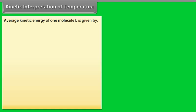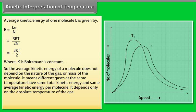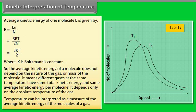Average kinetic energy of one molecule E is given by E equals Em upon N equals 3RT upon 2N equals 3KT by 2, where K is Boltzmann's constant. So the average kinetic energy of a molecule does not depend on the nature of the gas or mass of the molecule. It means different gases at the same temperature have same total kinetic energy and same average kinetic energy per molecule. It depends only on the absolute temperature of the gas. Temperature can be interpreted as a measure of the average kinetic energy of the molecules of a gas.